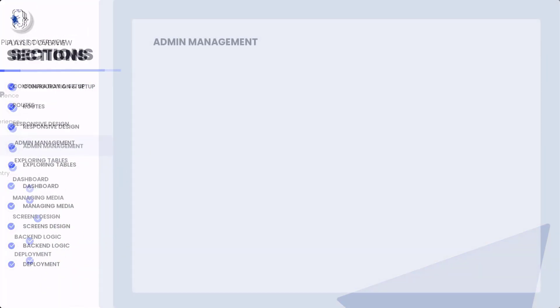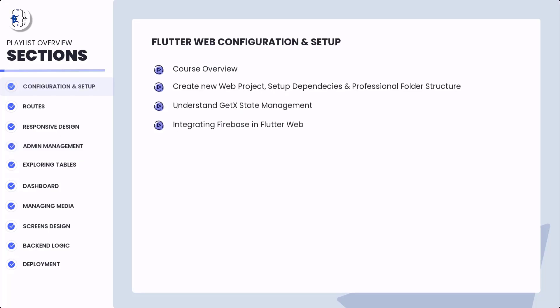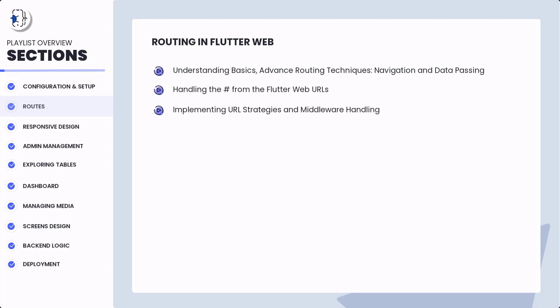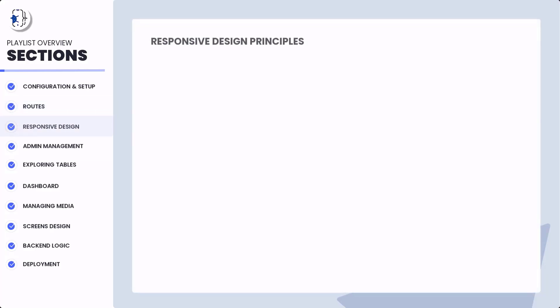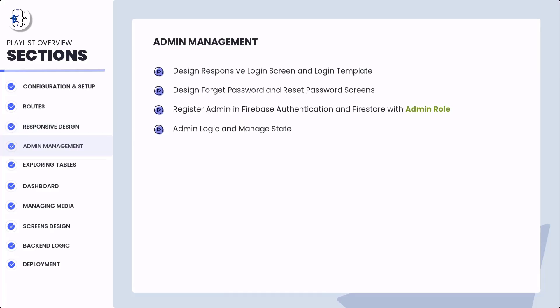We are creating a Flutter e-commerce admin panel and we are in Section 4. Section 1 was about setting everything up. Section 2 was about learning deeply about routes and navigation in Flutter web. Section 3 was very important because it was about responsive design for Flutter web applications to be used on desktop, tablet, and mobile. Make sure to watch those previous videos as they are very helpful. Based on those three sections we have started Section 4, and from here we will be moving towards completion of the admin panel.